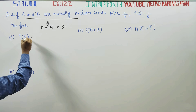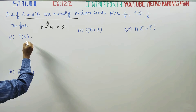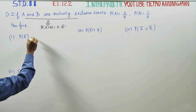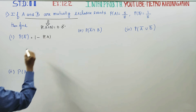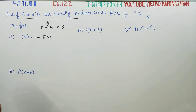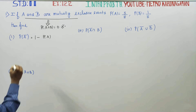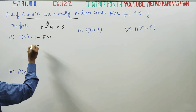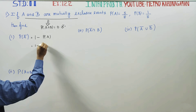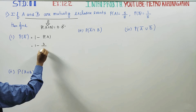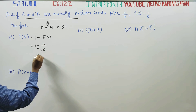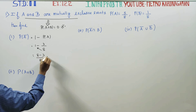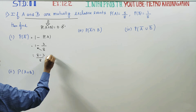First, find P of A dash. A dash is equal to 1 minus P of A. 1 minus P of A: the answer is 1 minus 3 by 8. Taking LCM, that gives 8 minus 3 by 8, and the answer is 5 by 8.